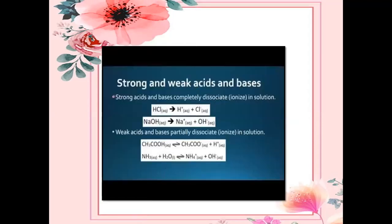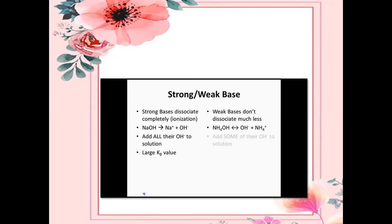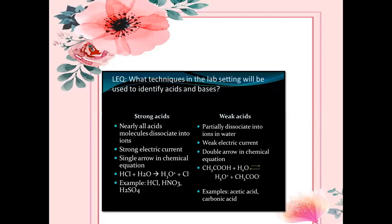Strong acids and strong bases are completely dissociated when ionized in solution. When completely ionized, we call it a strong acid or strong base. For example, HCl completely dissociates into hydrogen ions — it is a strong acid. NaOH is a strong base; its dissociation gives Na⁺ and OH⁻. Weak acids and weak bases are only partially dissociated in solution. KB is the dissociation constant for a base — a large KB value indicates a stronger base.